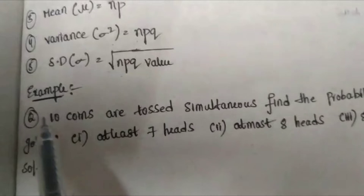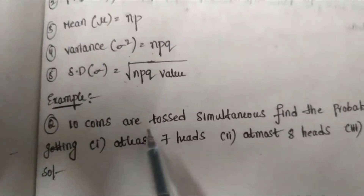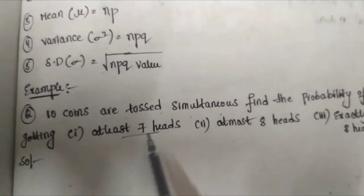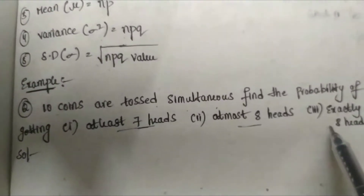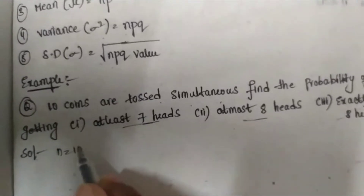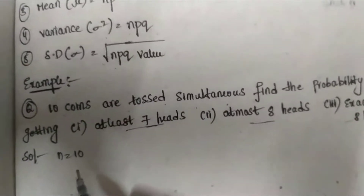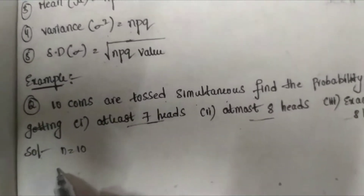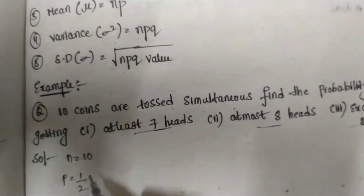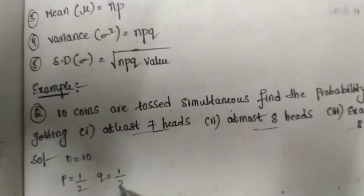Let's consider an example problem. Given that 10 coins are tossed simultaneously, we have to find the probability of getting at least 7 heads, at most 8 heads, and exactly 8 heads. Here given that N = 10 coins, so n = 10. If we toss a coin the number of possible outcomes is 2, so probability of success P = 1/2 and probability of failure Q = 1/2.